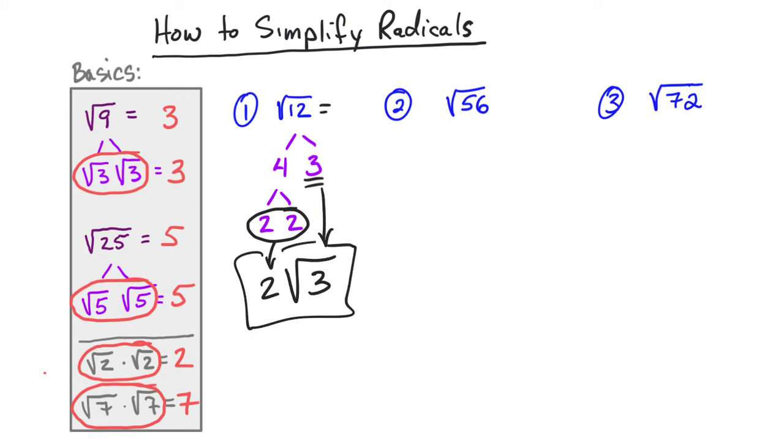So on this first question, the square root of 12 will turn into 2 square root of 3. Hope that wasn't too difficult. Again, you're looking for pairs in the factor tree that you can actually circle and then bring to the outside of the radical. Whatever can't be circled stays on the inside.